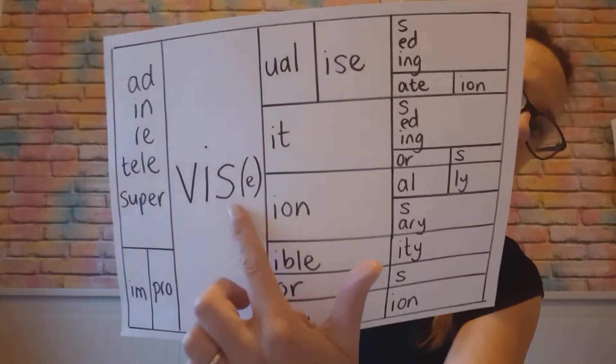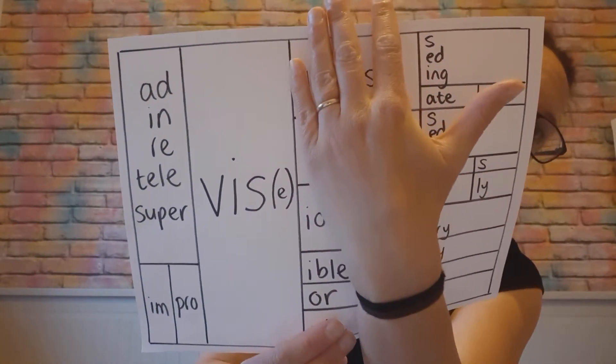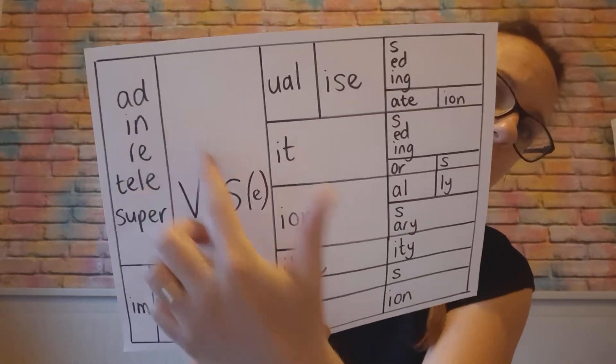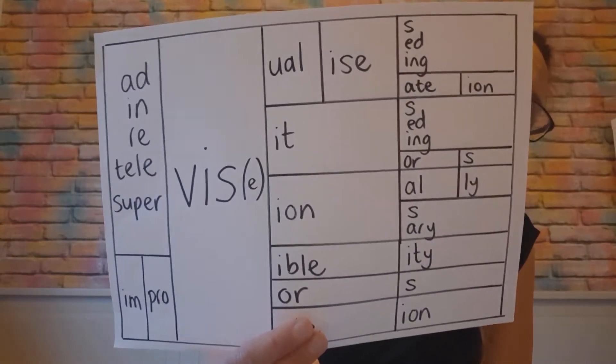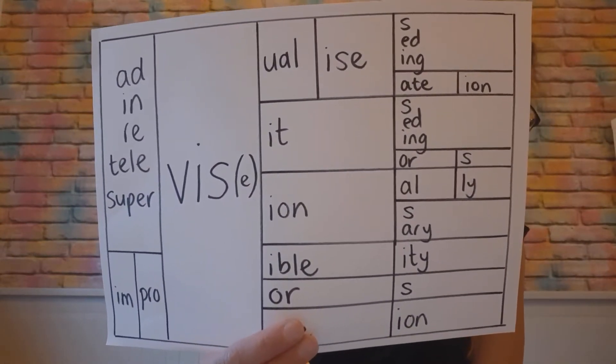You can see here I've popped the E on because if you are adding an ending to make a verb, something like 'advise', you do need that E on there. So I've just popped that E on there for you. So I'm going to hold the morpheme frame right up to the screen for you and you can pause the video and then you can write your word sums while it is paused.